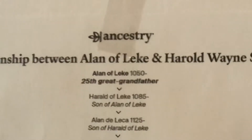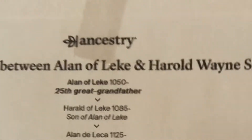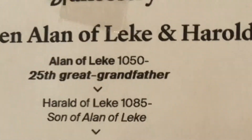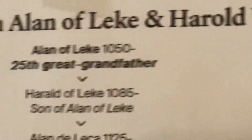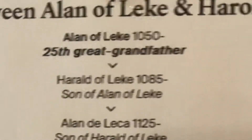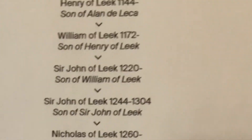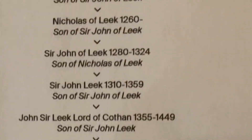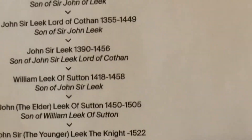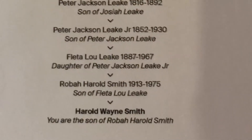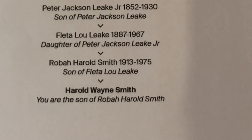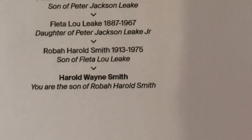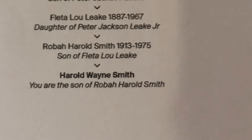This is the genealogy of the Leake family. It starts with Alan of Leek — they spelled it different ways throughout the centuries; this one is L-E-K-E — then Herald of Leek, and as you see it comes on down through all the generations, documenting each generation, all the way down to Harold Wayne Smith. That is the genealogy of the Leake family.